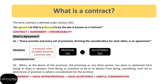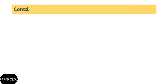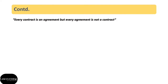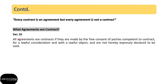Every contract is an agreement but every agreement is not a contract. So we need to find out what agreements are contracts. For this, we need to look at Section 10. It says all agreements are contracts if they are made by free consent of the parties, competent to contract, for a lawful consideration and with a lawful object, and are not hereby expressly declared to be void.